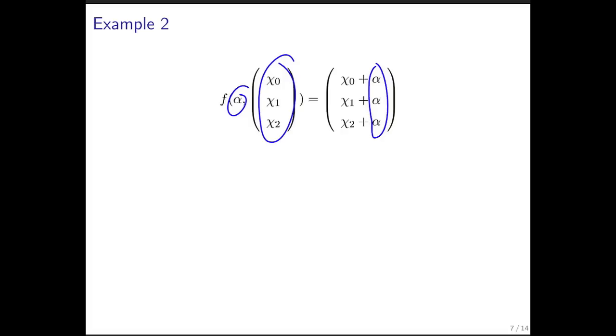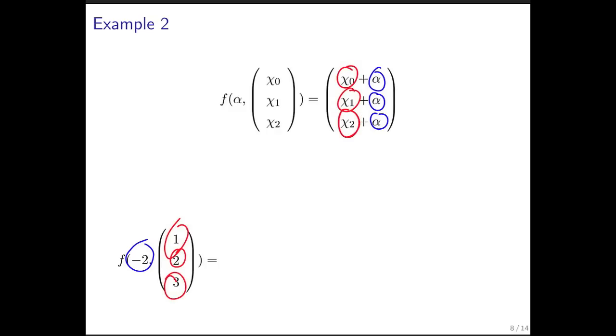So if we want to evaluate this function for a specific input, minus 2 for the scalar and the vector 1, 2, 3, then again what we need to do is substitute minus 2 in for alpha, and substitute 1, 2, and 3 in for the components of the vector that's the input.